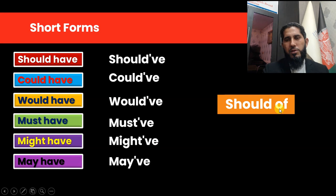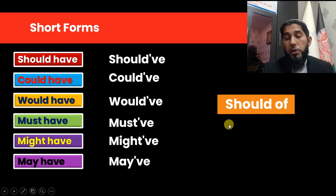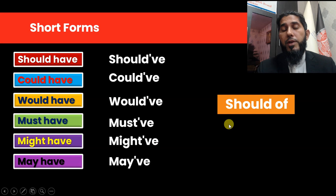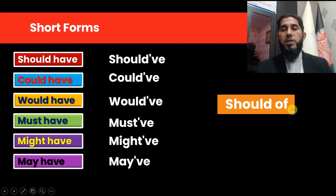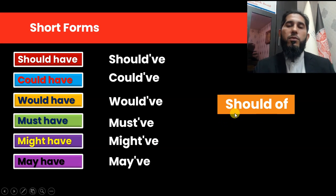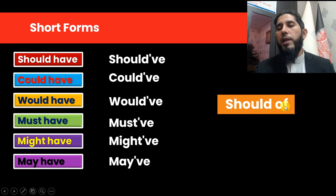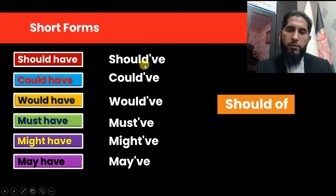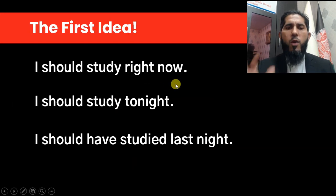In written English, native speakers sometimes write 'of' instead of 'have,' but according to grammar that is not correct. Just keep in mind, if you see that form, you should know they mean 'should have' or 'shoulda' — the short form.